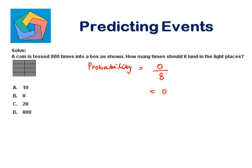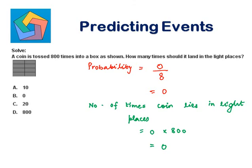So the number of times the coin lies in light places becomes 0 times 800, which is 0 again. So B, 0 is our answer.